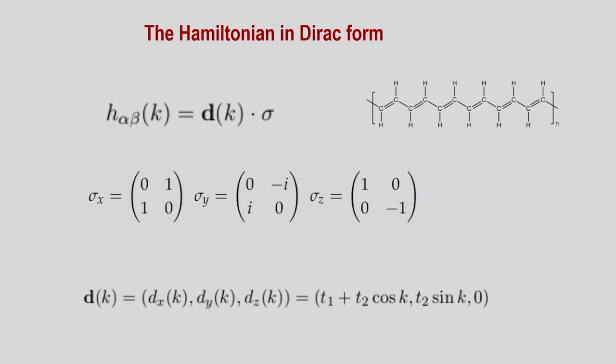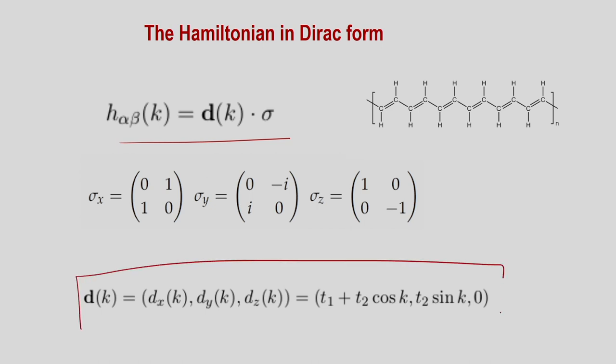Each carbon atom is connected to a hydrogen atom, but the hydrogen is not important here. Carbon has one electron available for conduction per atom, so we get a tight-binding Hamiltonian. The Hamiltonian H_alpha_beta has a massless Dirac form, where the sigmas are Pauli matrices sigma_x, sigma_y, and sigma_z. The important topological information is encoded in the d vector, and it is very important to note that dz equals zero for all k.